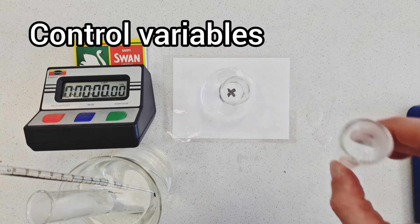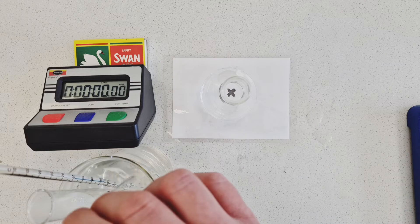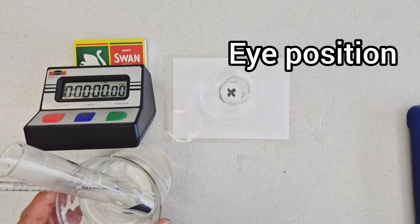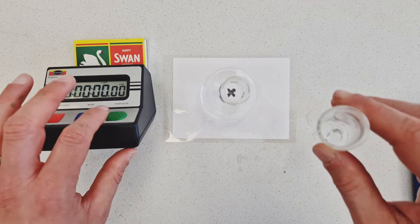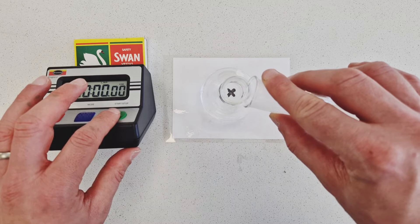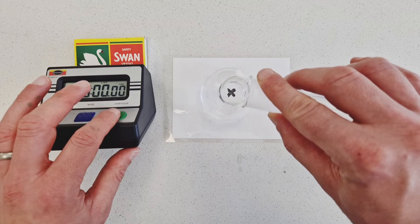At this point, it's worth stressing there are lots of controlled variables going on in this experiment. The volume of the solutions will be the same, the concentration of the solutions will be the same, my eye position will be the same, and finally, the speed of swirling of the conical flask will ideally be as close to the original as possible to make sure we have what is known as a fair test.